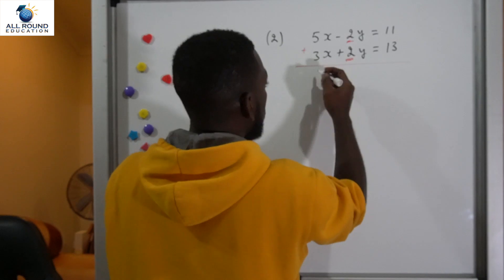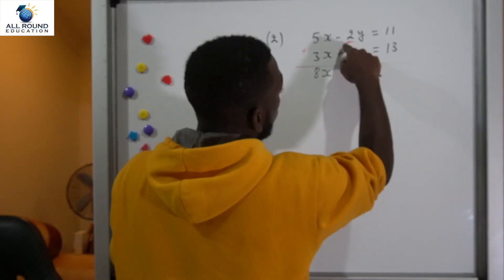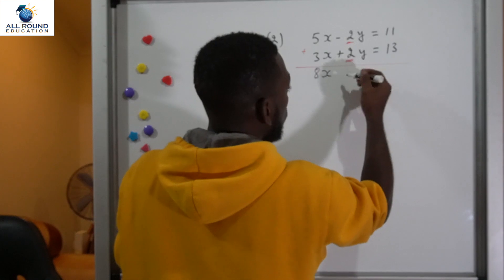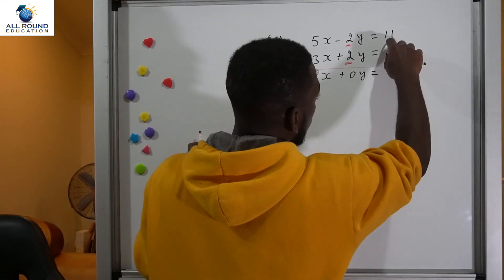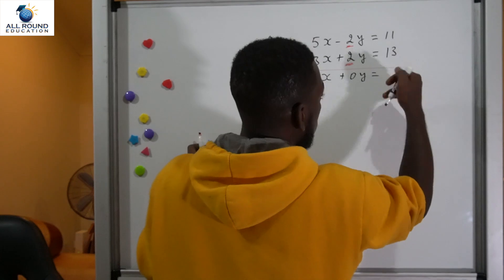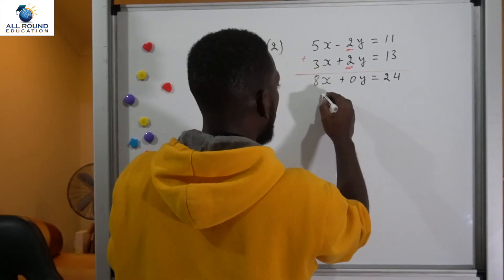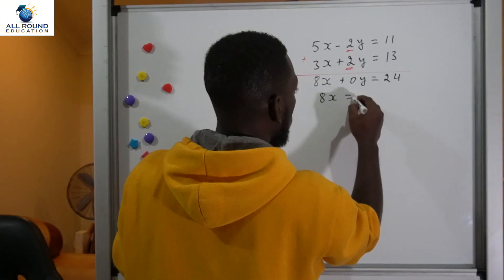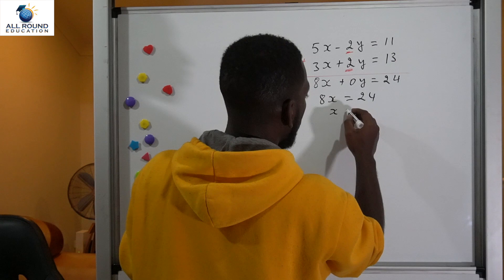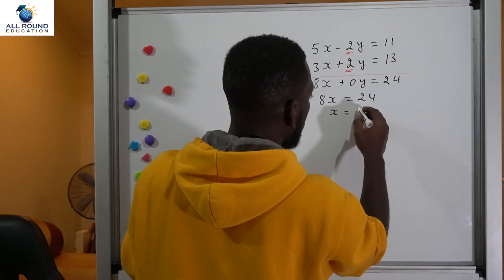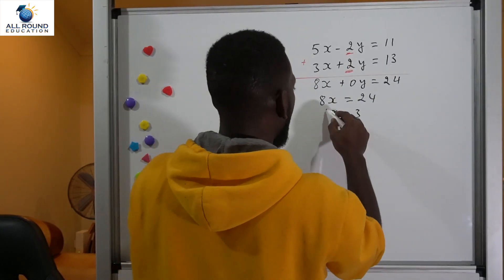Adding the two equations: 5x plus 3x gives 8x, and negative 2y plus 2y gives zero. On the right side, 11 plus 13 is 24. So we have 8x equals 24. Dividing both sides by 8 gives us x equals 3.